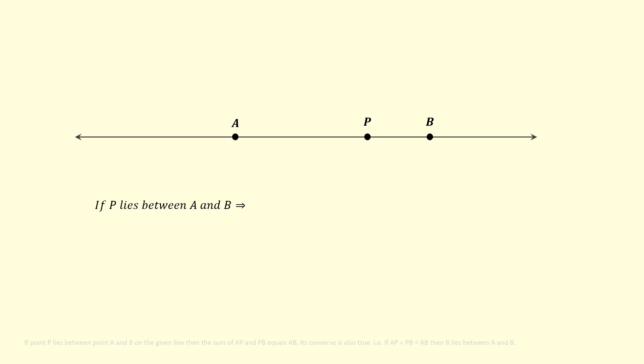on the given line, then the sum of AP and PB equals AB. Its converse is also true. That is, if